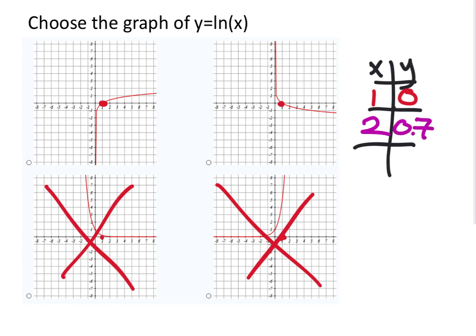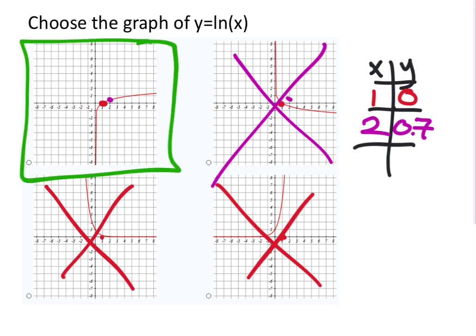So 2 is 0.7, which would be—well, we know it's positive at least, so it's right there. 0.7 on this one would be here—it missed the mark. So it must be this top left graph right there.